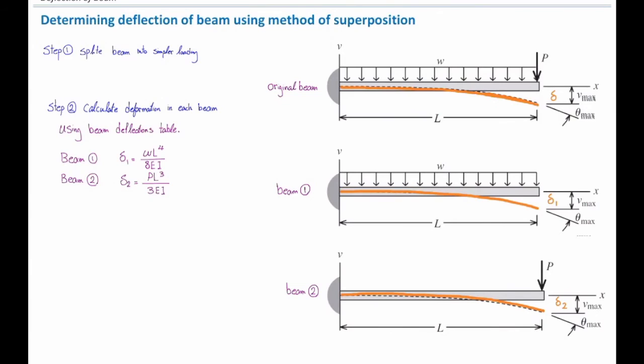Now, how much would be the deflection if I apply these two loads simultaneously at the same time? I just need to add them together. This is the principle of superposition. So the overall deflection at that point is obtained by superposing the effect of the load in each of these two beams. And I can say delta is delta one plus delta two, and the overall deflection in that beam is WL to the fourth over 8EI plus PL cubed over 3EI. And that is the answer of this problem.